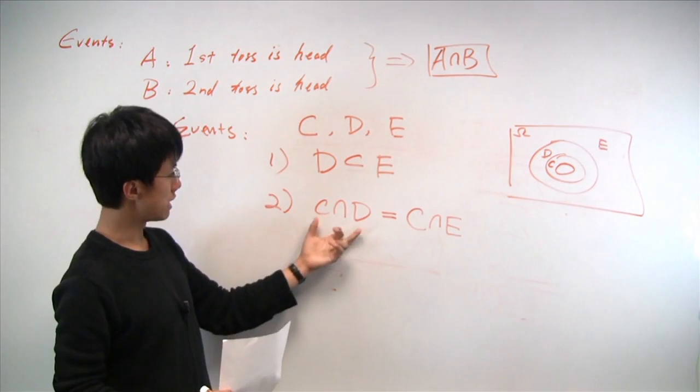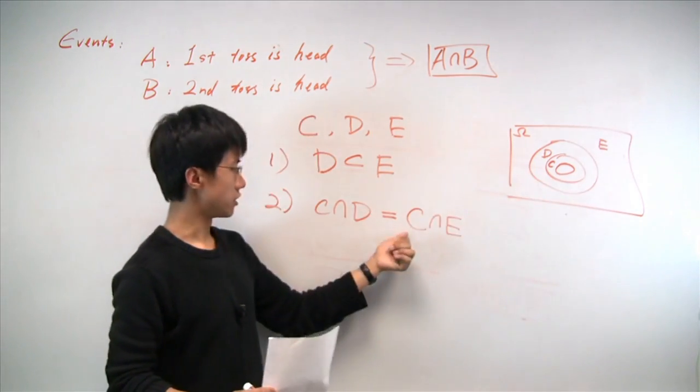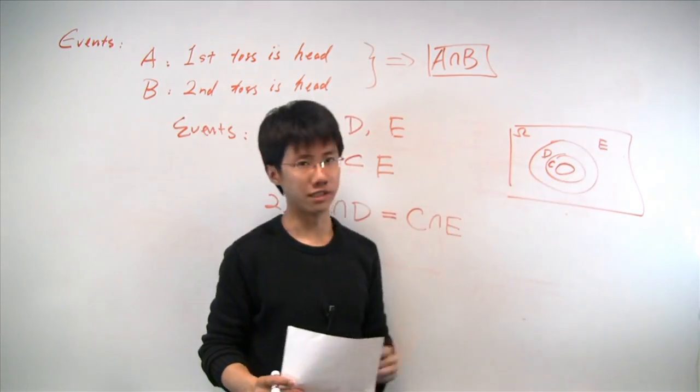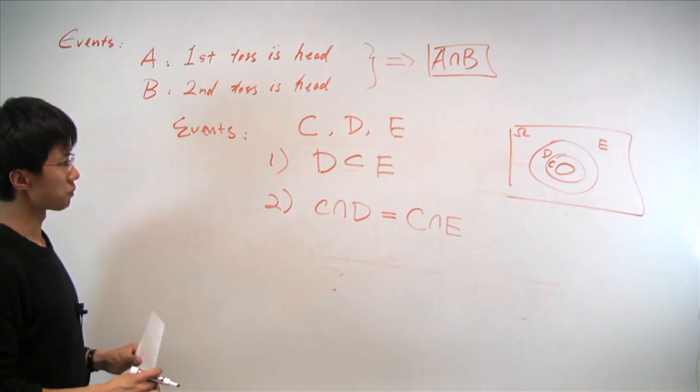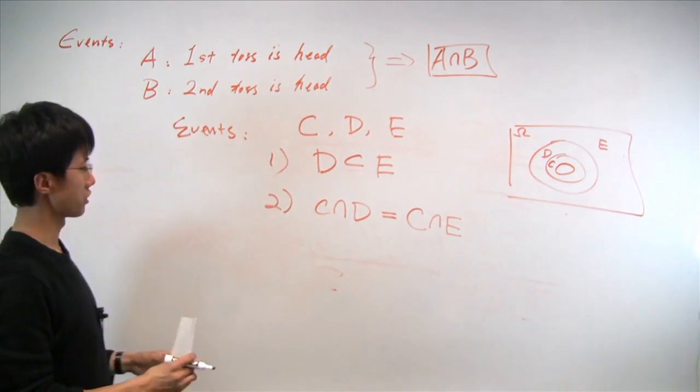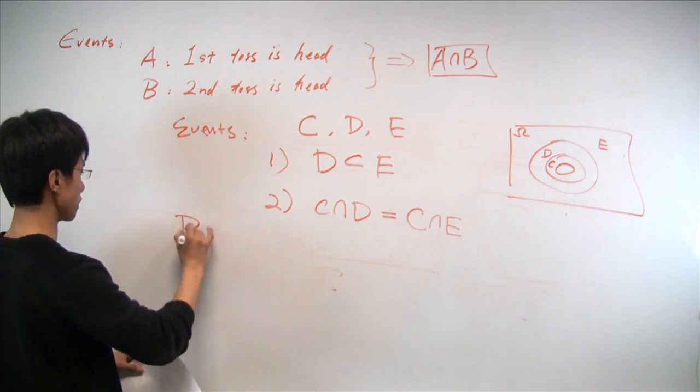And you can see C intersection D will be C, and C intersection E will still be C. Hence, the second equality is true. So if both equalities are true, we have the following relationship.